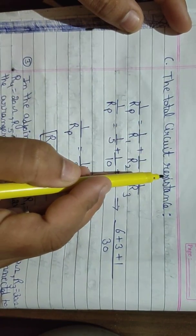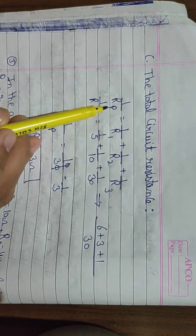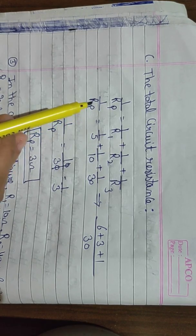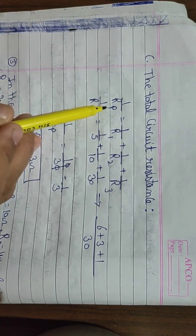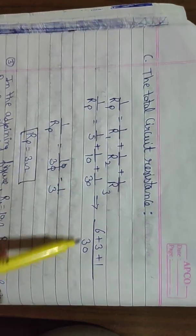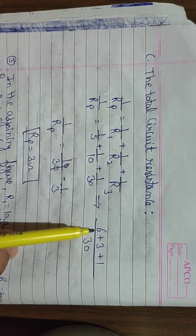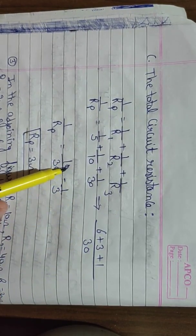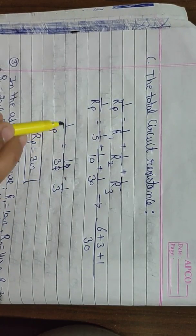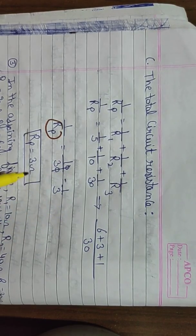For Part C — total circuit resistance. Since all three resistors are in parallel, we use: 1/Rp = 1/R1 + 1/R2 + 1/R3 = 1/5 + 1/10 + 1/30. Taking LCM of 30: = 6/30 + 3/30 + 1/30 = 10/30 = 1/3. So 1/Rp = 1/3, therefore Rp = 3 ohm.